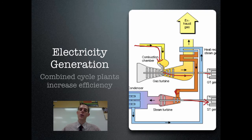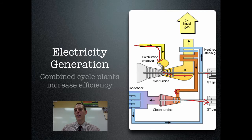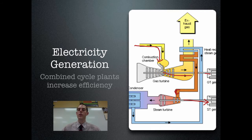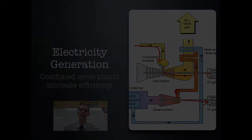That exhaust gas, which is super hot, is then used to boil water, creating steam that turns a second steam turbine and a second generator. So you're using the vapor from the gas combustion to spin one turbine, and the heat off that gas to boil water for a second turbine. Combined cycle plants increase efficiency because you use one fuel source to generate electricity in two different ways.